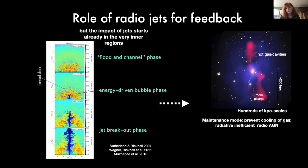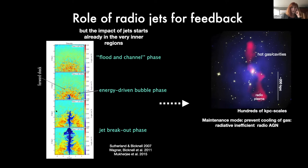The jet can produce outflows and interact with the medium, but what is interesting for our project is also the suggestion given by numerical simulations. You see here a few shots from simulations by the group of Bicknell and Mukherjee — now we are talking about the parsec or sub-kiloparsec scale. A jet starts in a clumpy, dense medium: it interacts with a dense cloud, some clouds are destroyed, some are pushed forming the outflow, and this interaction also produces a bubble-like cocoon that expands into the host galaxy.